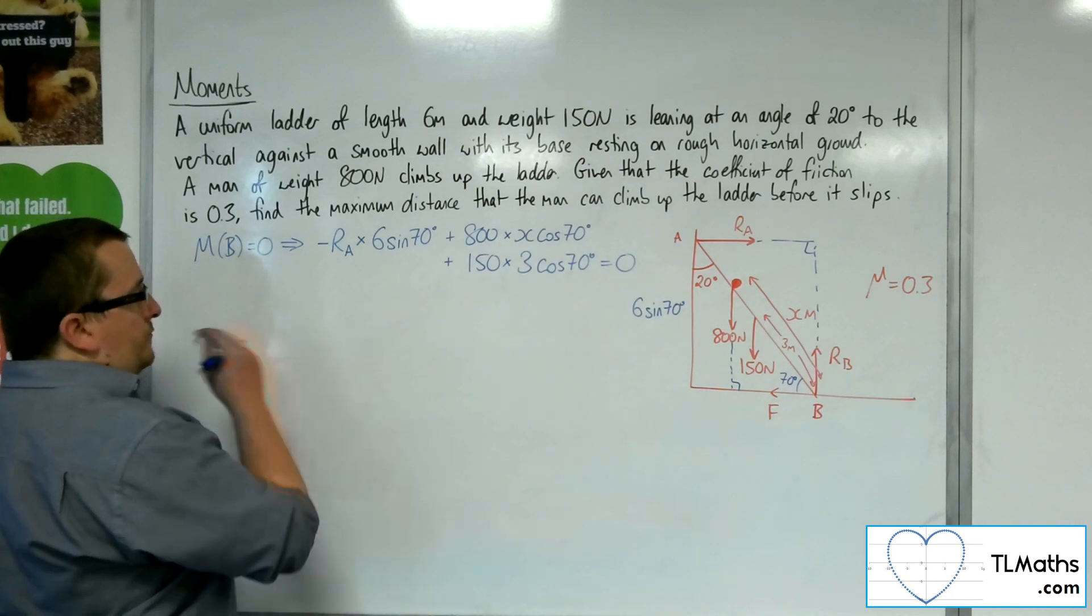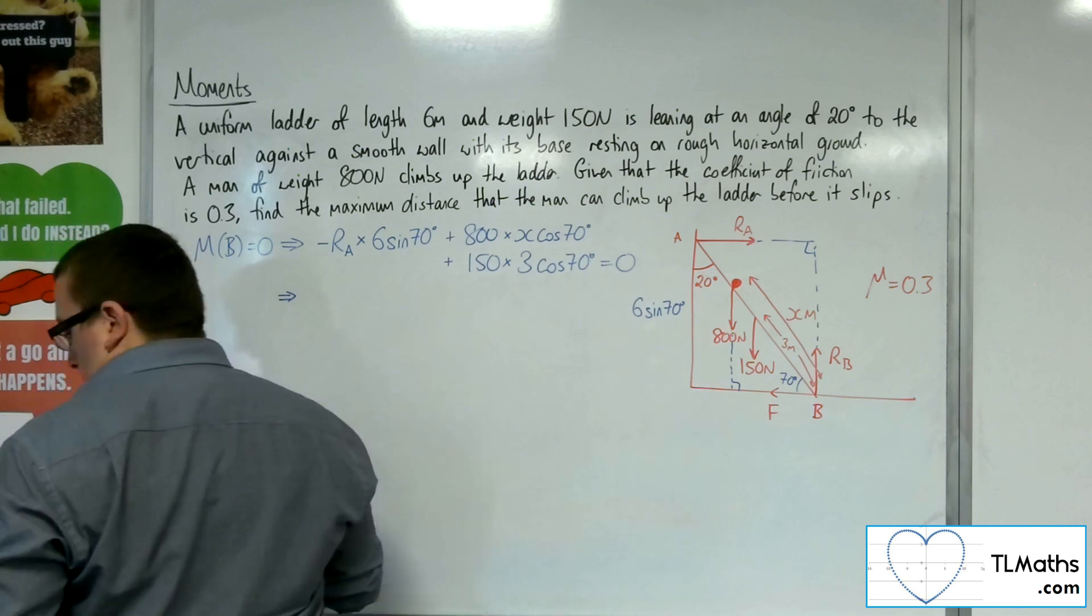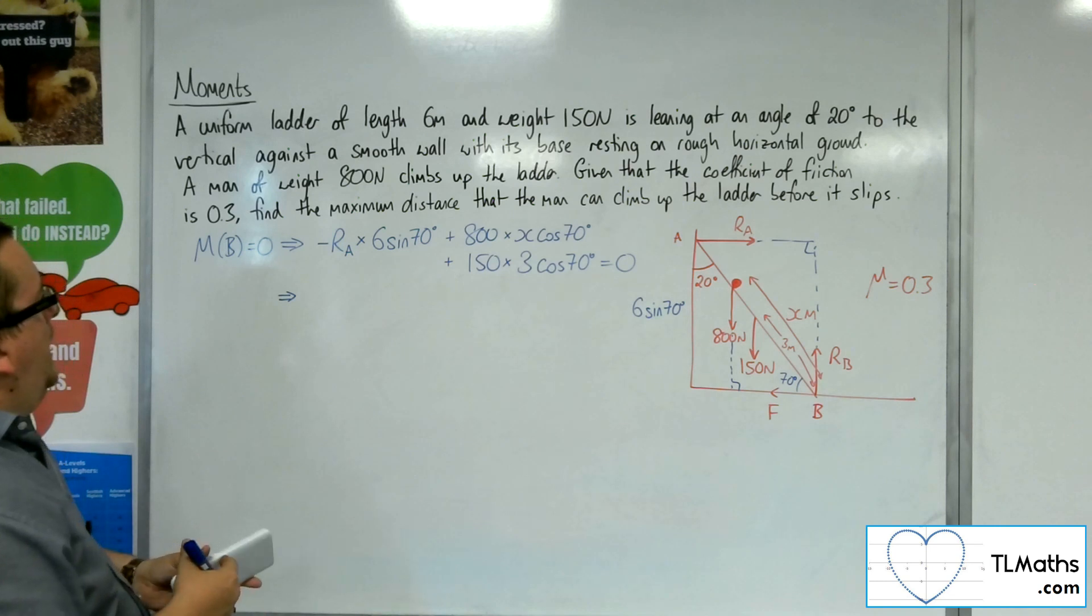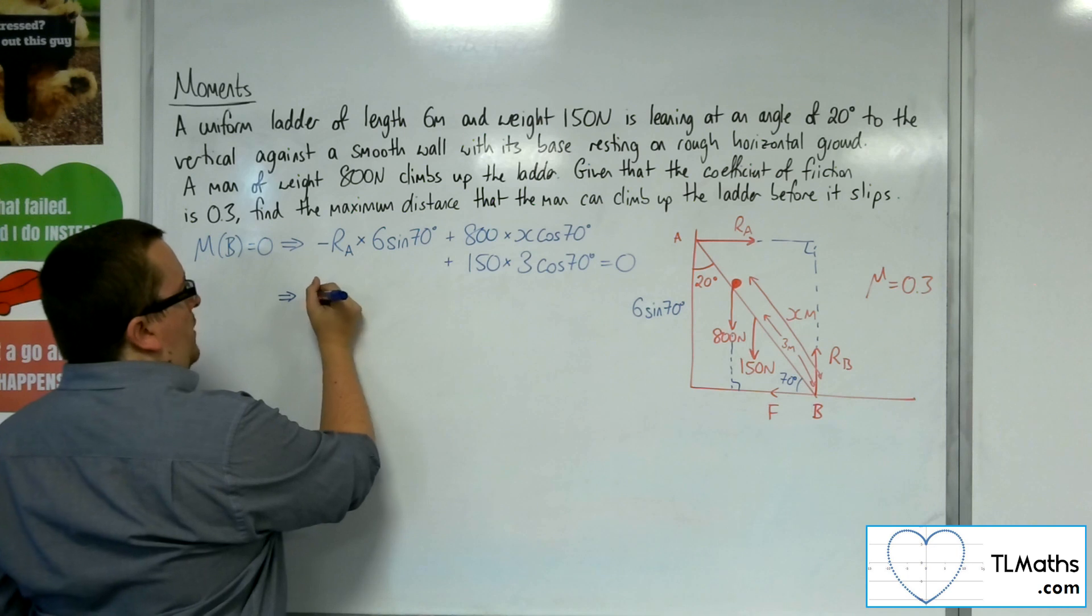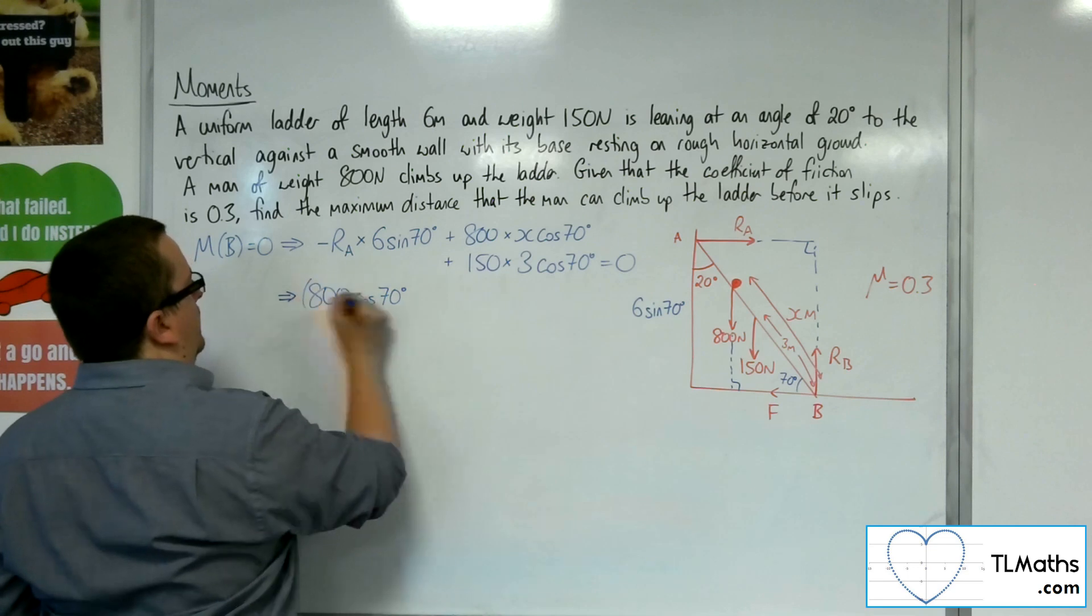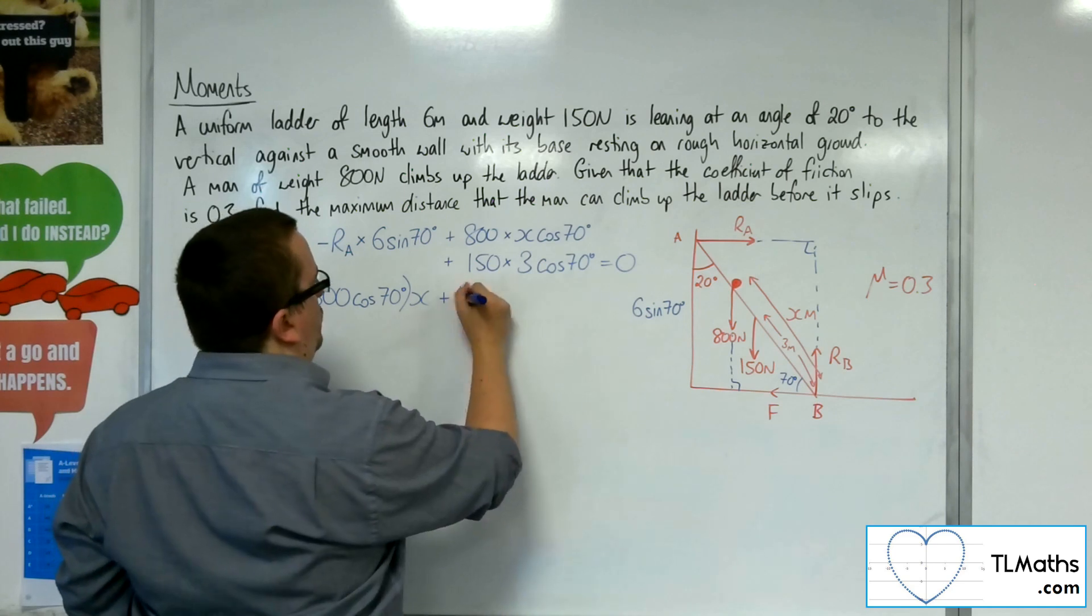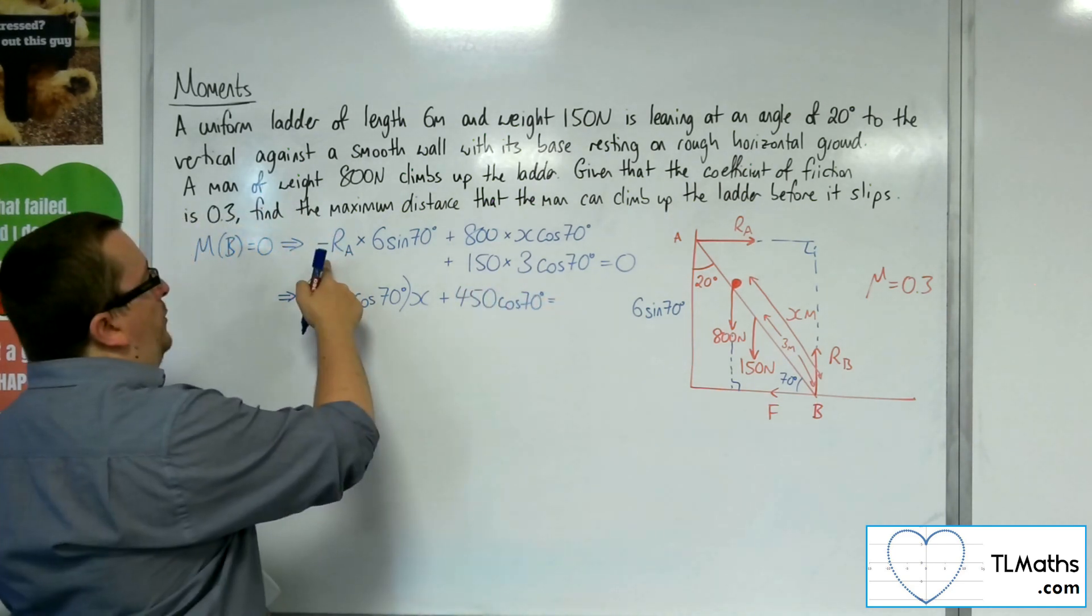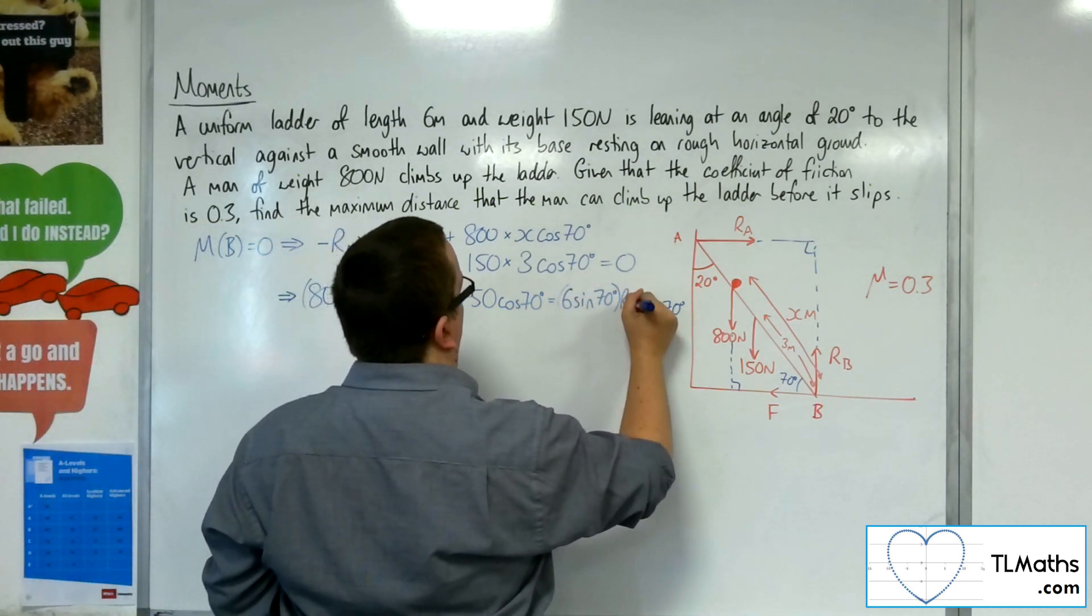So what have I got? Well, from that, let's simplify things, if we can. Now, 6 sine 70 is not going to be particularly nice. So let's write it as 800 cosine 70 X plus 150 times 3, so 450 cosine 70 will be equal to 6 sine 70 RA.